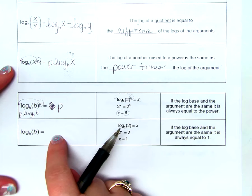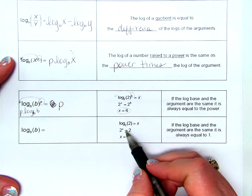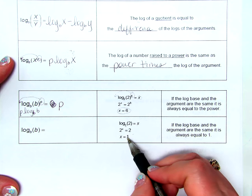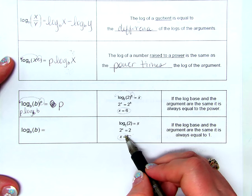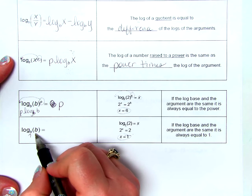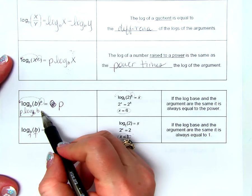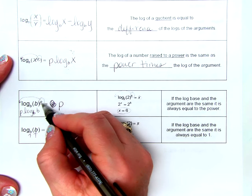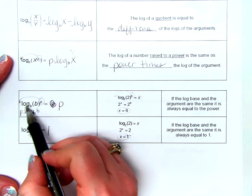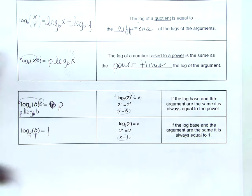Another related property: log base B of b. If we rewrite this in exponential form, it would be 2 to the x power equals 2, and since 2 to the first power equals 2, x equals 1. Any time the base and the argument are the same, the answer is 1. So when we bring p down in front and get p log base B of b, since log base B of b equals 1, all that's left is p, because p times 1 is p.